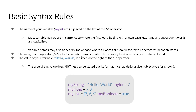The assignment operator equals sets the variable name equal to the memory location where your value is found. This equals sign sets the variable name to the memory location — these values. The value of your variable, like 'hello world', is placed on the right of the equal operator. The type of this value does not need to be stated but its format must abide by a given object type. These are examples of proper syntax rules following Python conventions.